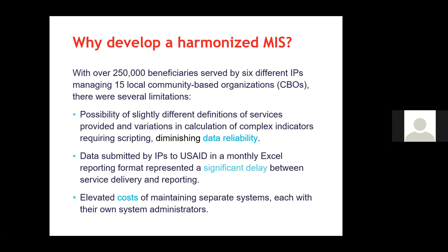Why develop a harmonized MIS? With over 250,000 beneficiaries being served by a number of different implementing partners who in turn engage community-based organizations, each implementing partner had a different information management system. This led to limitations including the possibility that slightly different definitions of services and variations in calculations contributed to diminished data reliability. Additionally, data was submitted monthly via an Excel tracker to USAID, representing a delay between service delivery and reporting, plus the costs of maintaining separate systems each with their own administrators.